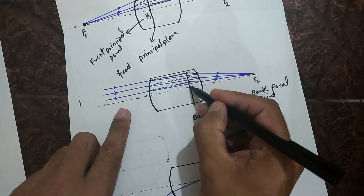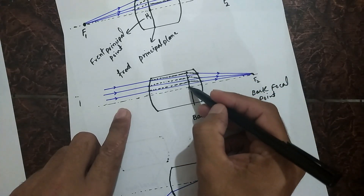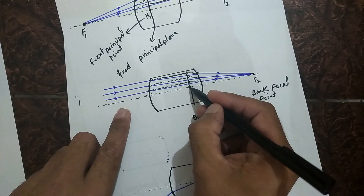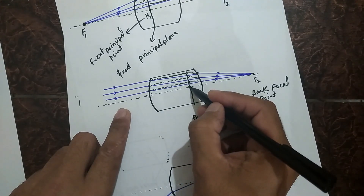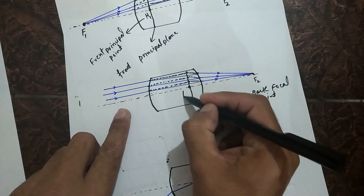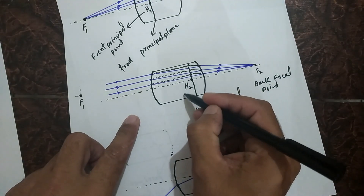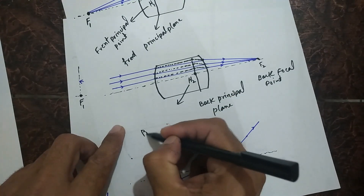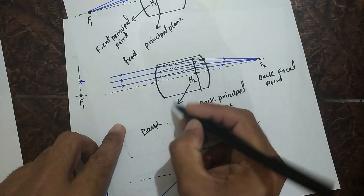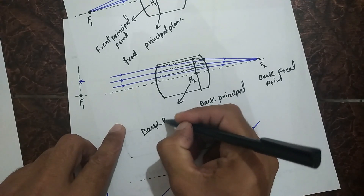The point where the back principal plane intersects the optical axis is represented by H2, and this is called the back principal point.